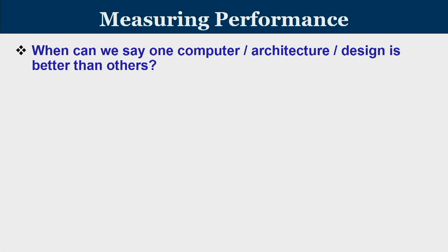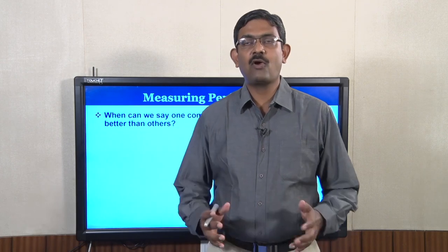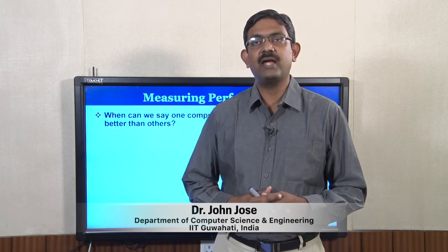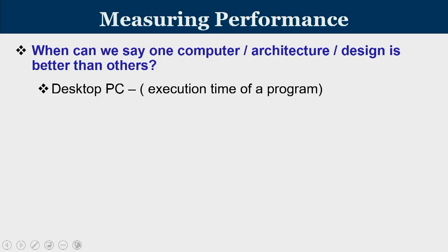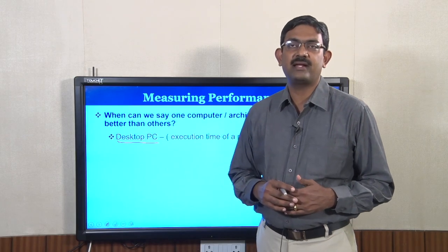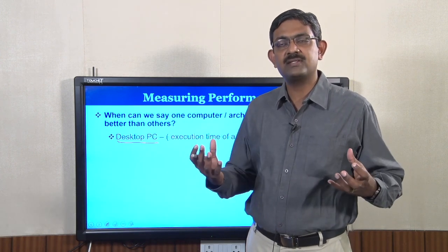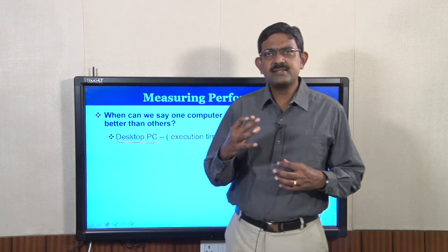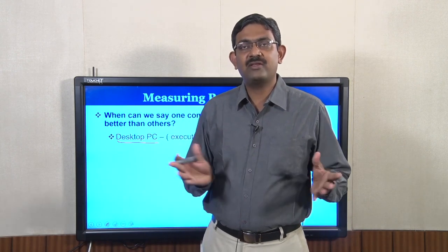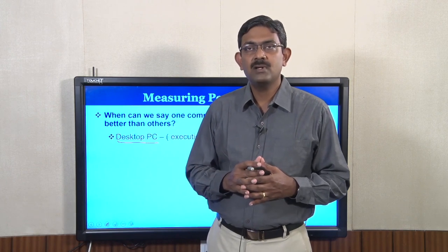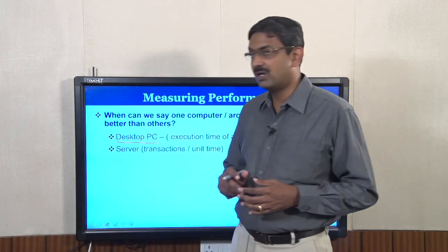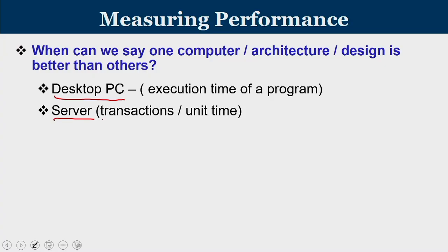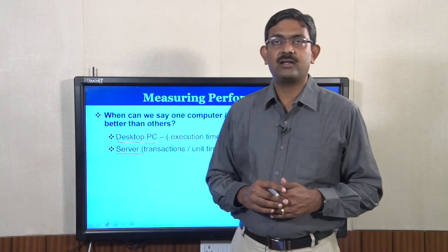When can we say that one computer is better than another one? It is a very common question we face in day-to-day life. When you consider the context of a desktop PC, the execution time of a program is the best metric to assess its performance. Given two desktop PCs, we run the same program on both and find out execution time — the lower one tells you which is a faster desktop. But if you go to servers, a metric known as transactions per unit time will be more relevant.